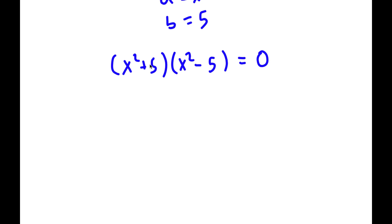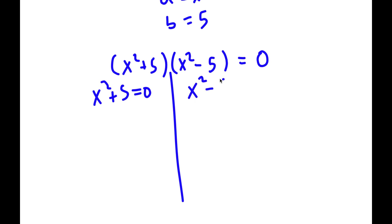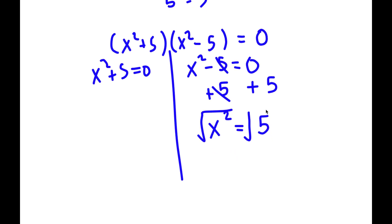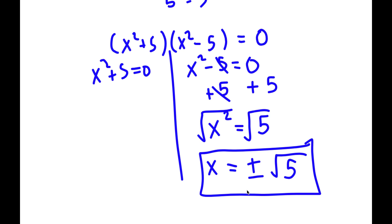This gives me two equations: x squared plus 5 equals 0, and x squared minus 5 equals 0. Starting with x squared minus 5 equals 0 — adding 5 to both sides, these cancel out and I have x squared equals 5. Taking the square root on both sides, the square root of x squared is x, so x equals positive or negative square root of 5. These are two solutions.